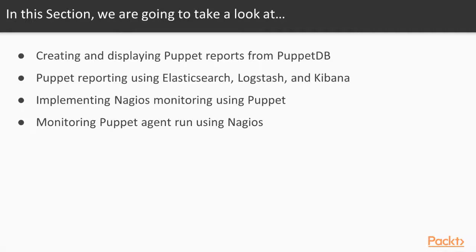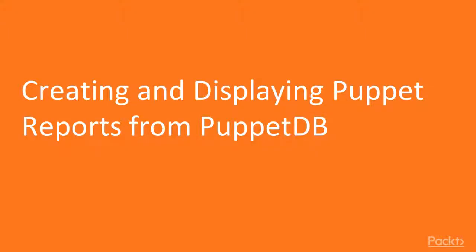Next, we will learn about the different Nagios types available in Puppet, and then we will create an extensive module to configure a dynamic Nagios monitoring system with Nagios server and clients. Finally, we will look at how to monitor Puppet agent runs using Nagios in our infrastructure.